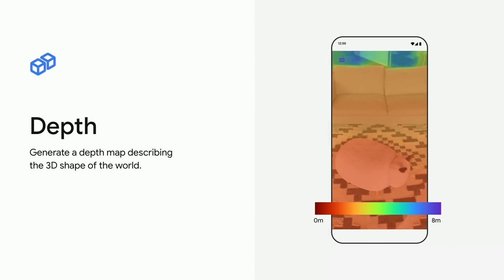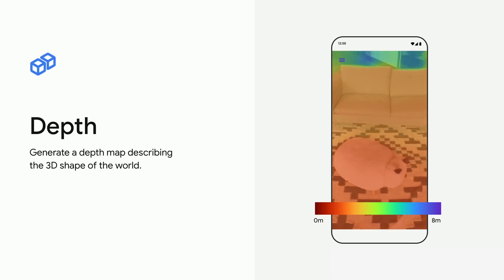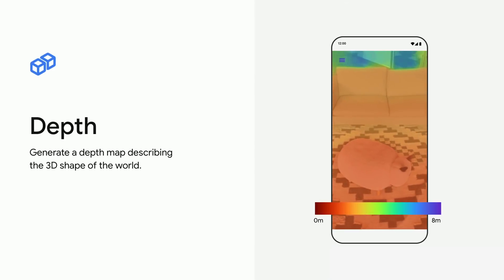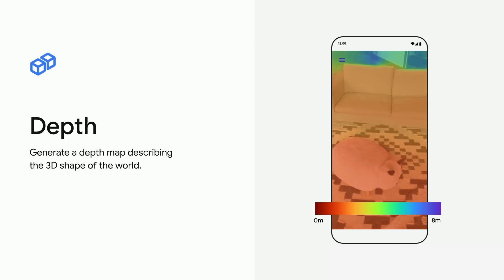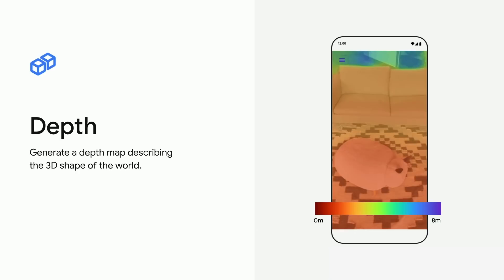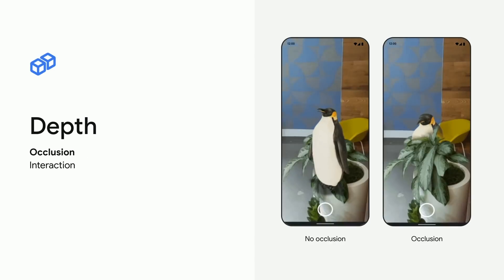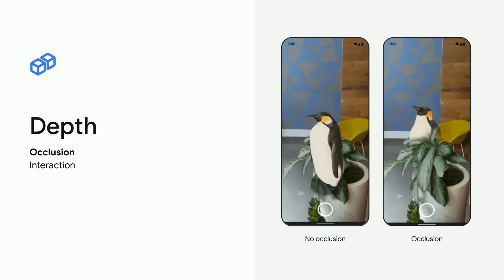Another key part of immersion we've been improving is depth. Depth enables AR experiences to have more interactions with the real world. We use the existing camera on a smartphone to build a depth map, which captures the shape of the world out to 8 meters, or 26 feet, about the size of a big room. Here you can see a video representation of the depth map, where the color changes from red to blue based on how far away that pixel is. One thing this enables is occlusion, where virtual objects appear behind real ones. This is valuable in all AR experiences.